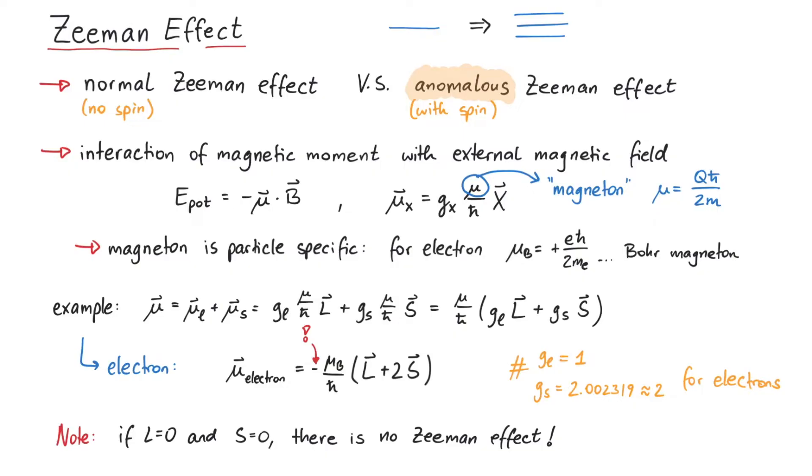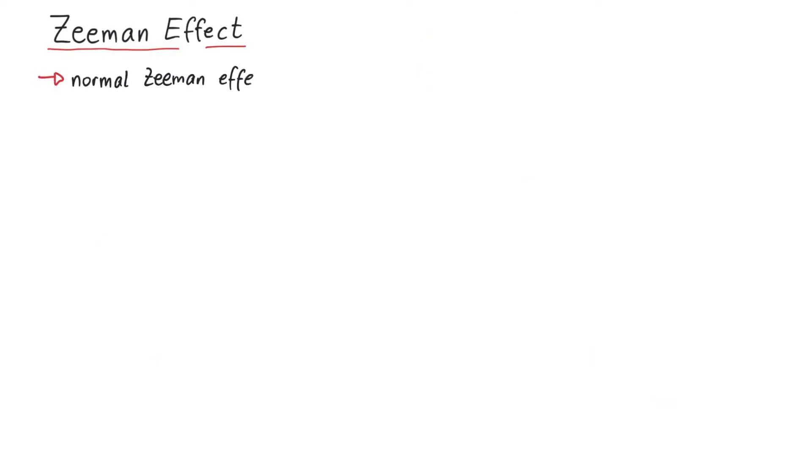Now that we have set up all necessary equations, let's talk about the Zeeman effect for an external b-field in the z-direction. First, the normal Zeeman effect.